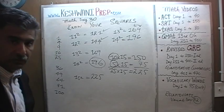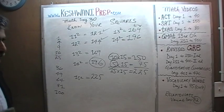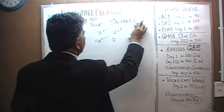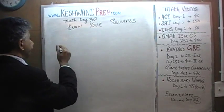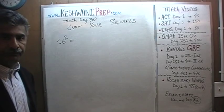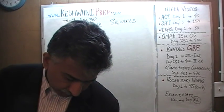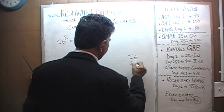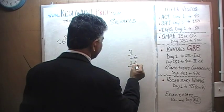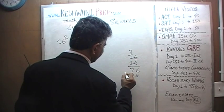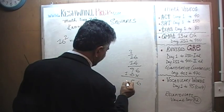Now we're going to do 16 squared. 16 times 16: 6 times 6 is 36, carry 3; 6 times 1 is 6 plus 3 is 9; and then 16. That gives us 256.